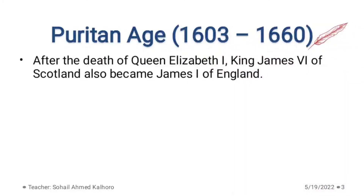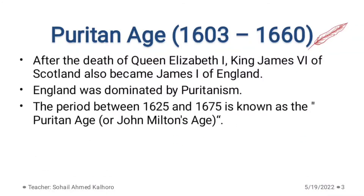This period started after the death of Queen Elizabeth, who was ruling England during the age of Shakespeare. After the death of Queen Elizabeth, King James of Scotland was brought into England and he became King James the First of England. That started the age called the Puritan Age, during which England was totally dominated by the Puritanism movement.